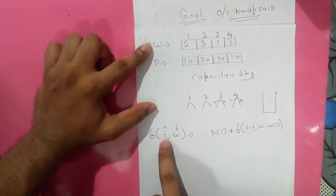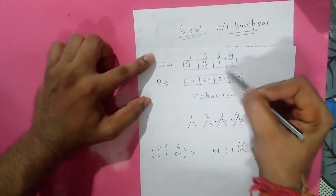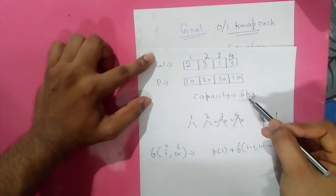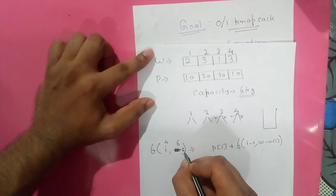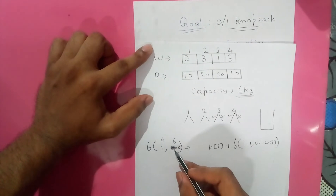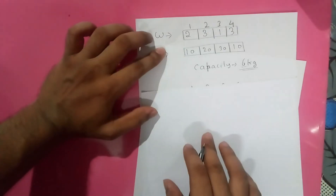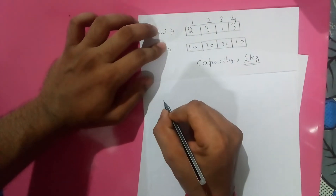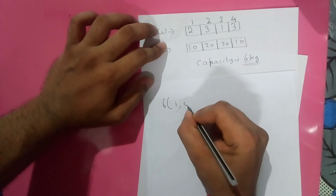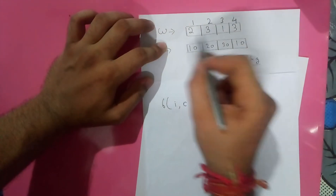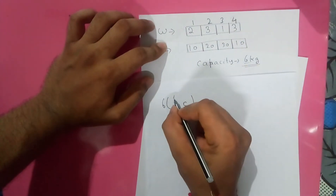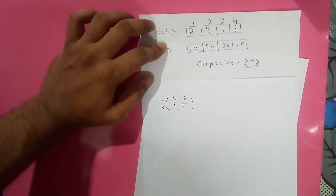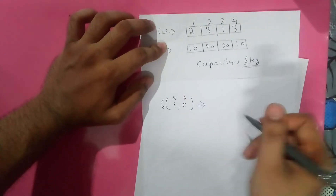I have taken two parameters, I and C. Initially I have four items, so I = 4, and C is the capacity which is 6 kg. I is the current number of items available, so initially I will have all four items and the entire capacity of 6 kg. Whenever this function is called, after all the recursive calls I need to return the maximum profit.